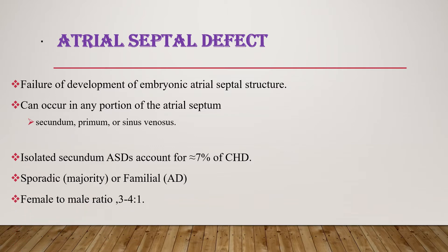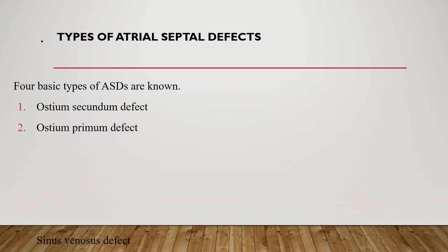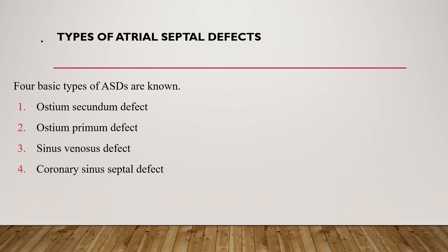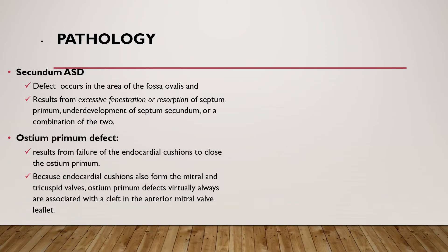This atrial septal defect can be sporadic or familial, and the female to male ratio is three to one, so shunt lesions are more common in females than males. When we see the types of atrial septal defect, there are four basic types: ostium secundum defect, ostium primum defect, sinus venosus defect, and coronary sinus septal defect. Secundum ASD is a defect that occurs in the area of the fossa ovalis, resulting from excessive fenestration or resorption of septum primum, underdevelopment of septum secundum, or a combination of the two.